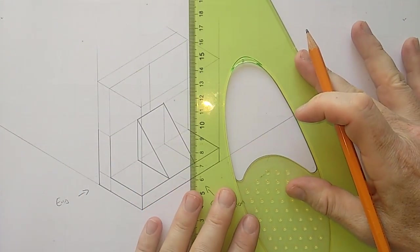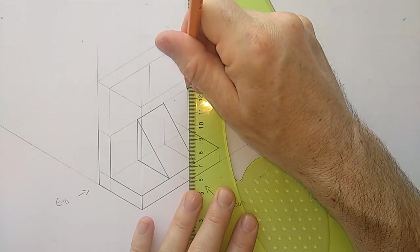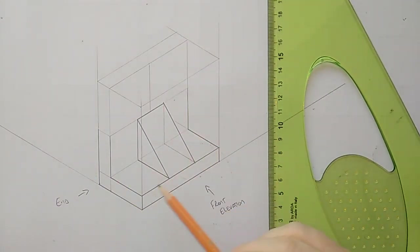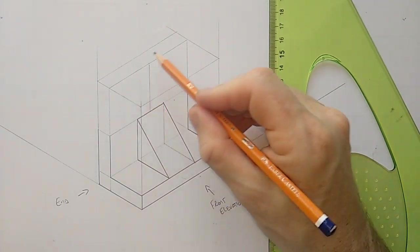And of course, the same with the vertical bit here. We don't need to worry about hidden lines in these drawings. So now, we've got all the bottom bits of this object drawn. It's just the top here.